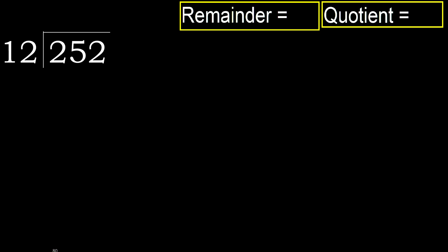252 divided by 12. 2 is less, therefore next. 25 is not less, therefore work with 25. 12 multiplied by which number is nearest to 25, but not greater?